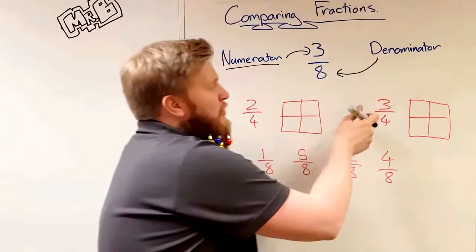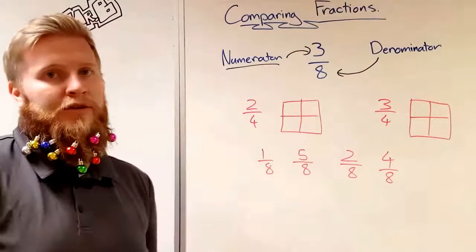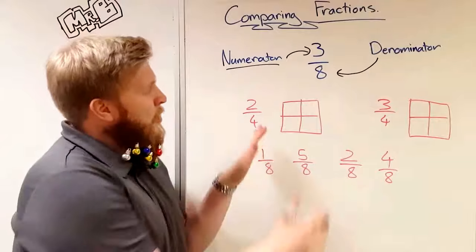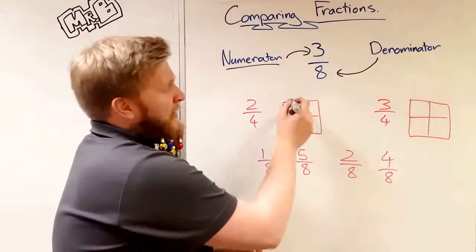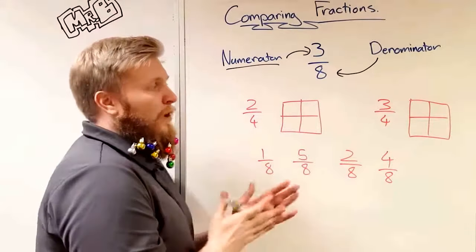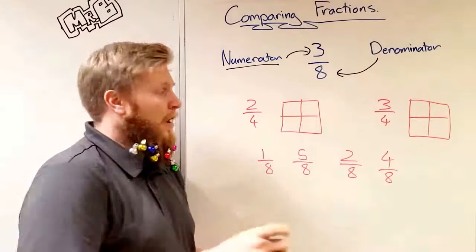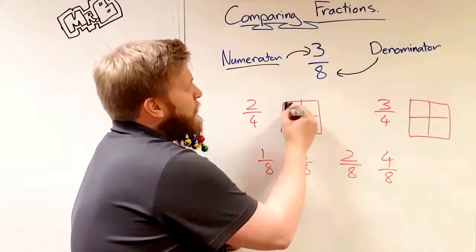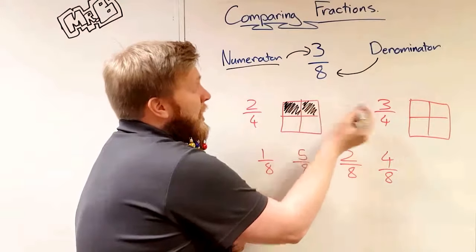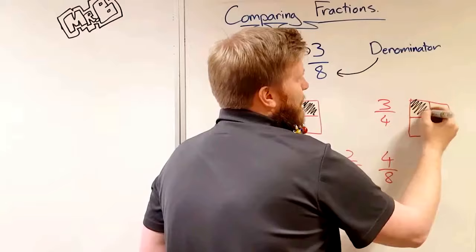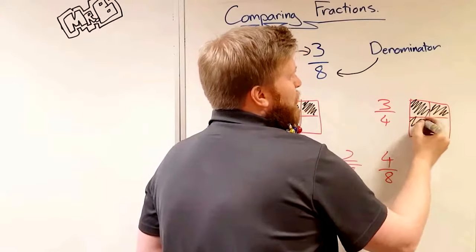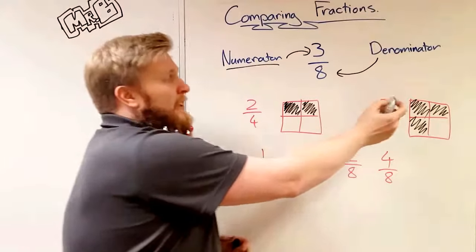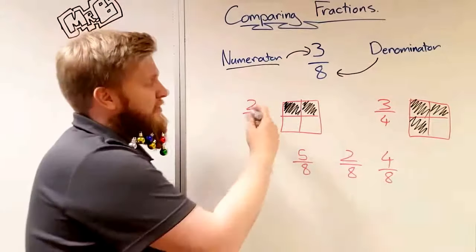So we have two fractions here, two-quarters and three-quarters. Now we're comparing them to see which one's the biggest one, which one's the smallest one. We've got two squares here with four equal parts, quarters. Remember fractions are equal parts. So here I'm going to color in two, and on this one I'm going to color in three. As we can clearly see when we do that, the three-quarters is bigger, it takes up a bigger area. So this one is the bigger fraction and this is the smaller fraction.